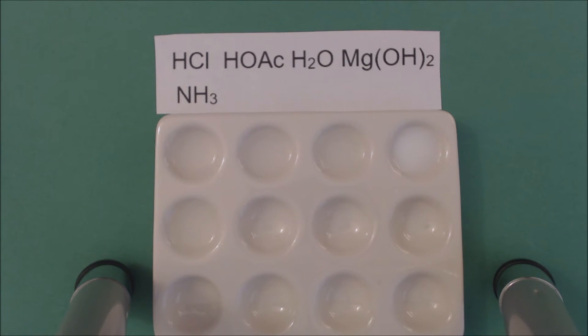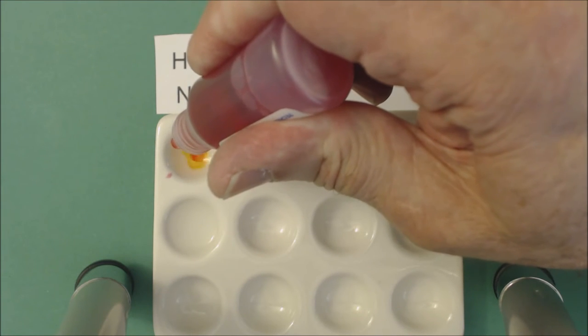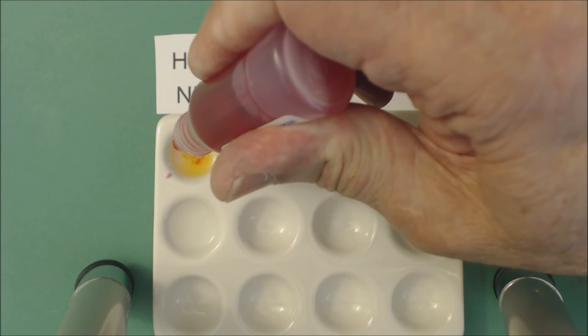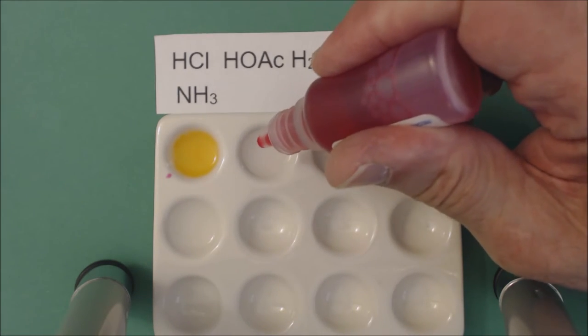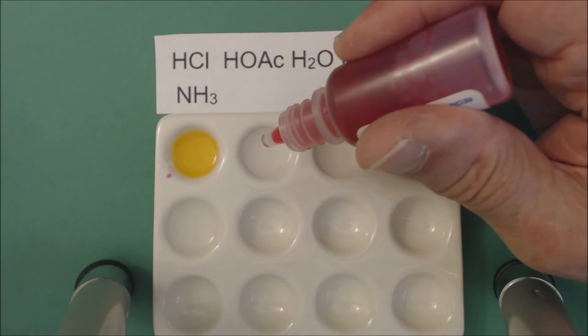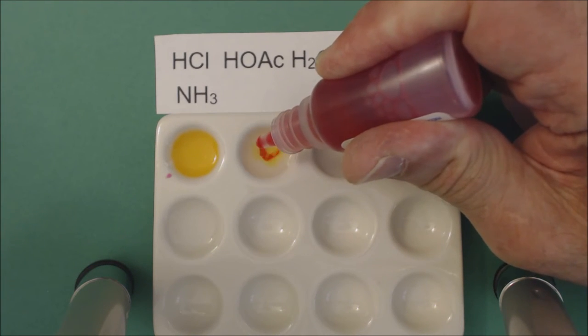I'm going to add five drops. You can see it's yellow. By the way, 0.1 molar hydrochloric acid is about like stomach acid. This is vinegar.